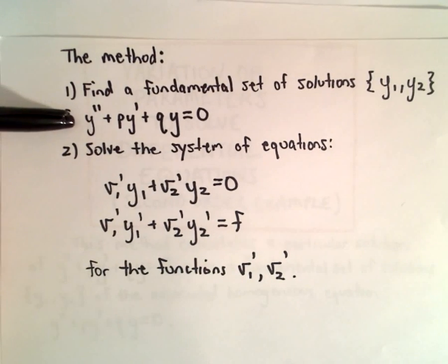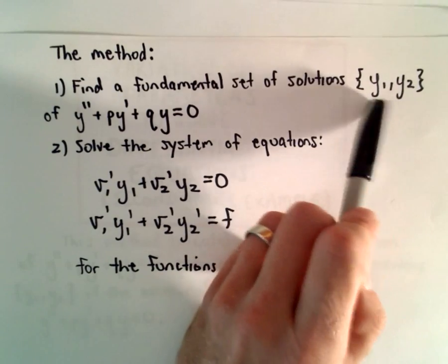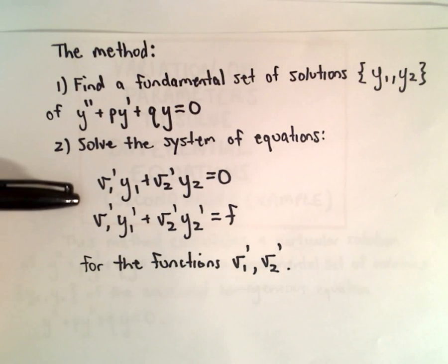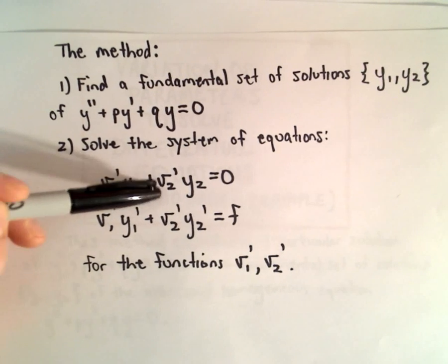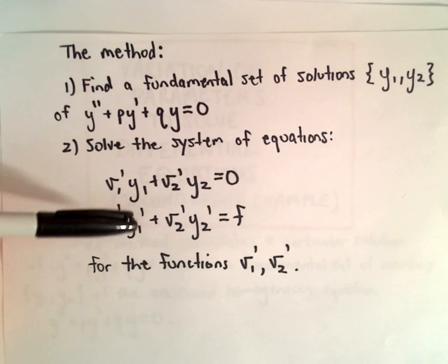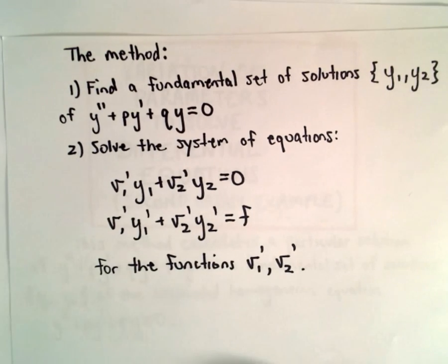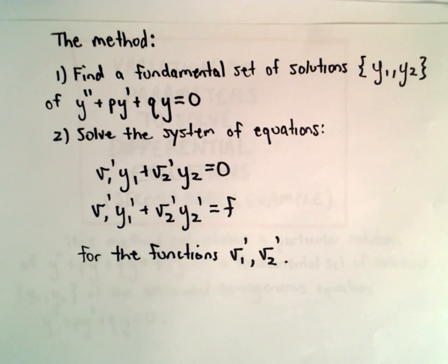If you do have one solution — if you can find at least one — we can use reduction of order to find the other. In my first example, we're going to be given the fundamental set of solutions for free. After that, it seems relatively straightforward, at least in the second-order case. What we do is solve the system: v₁'·y₁ + v₂'·y₂ = 0, and v₁'·y₁' + v₂'·y₂' = f. We solve that for the functions v₁' and v₂'. Once we have those, we calculate an antiderivative.